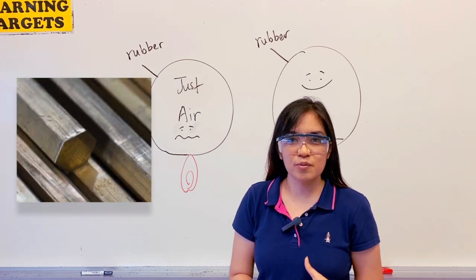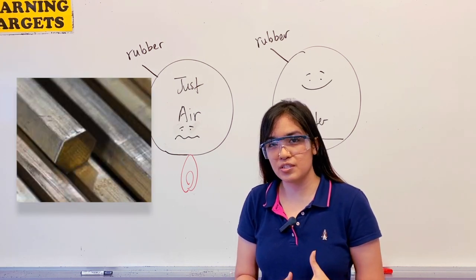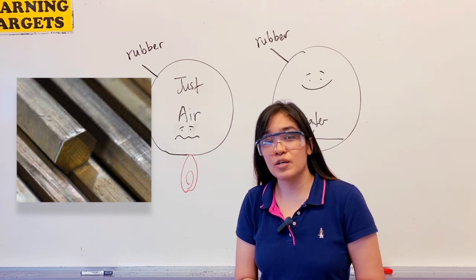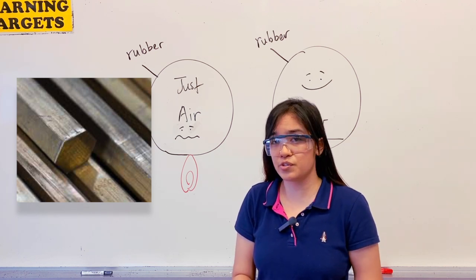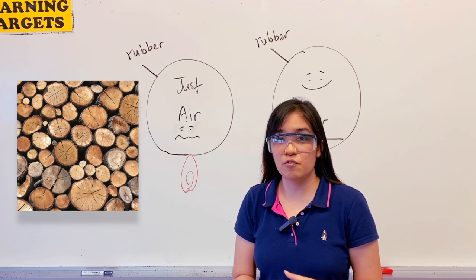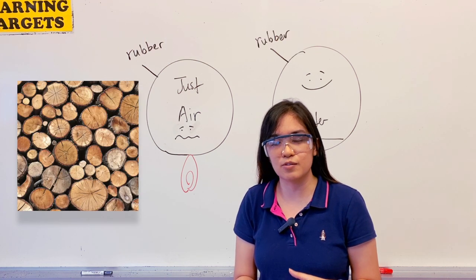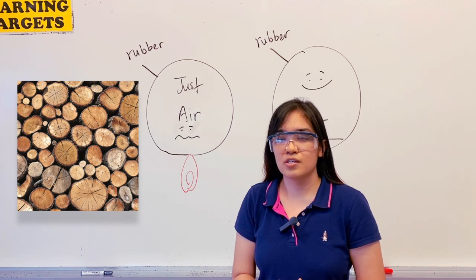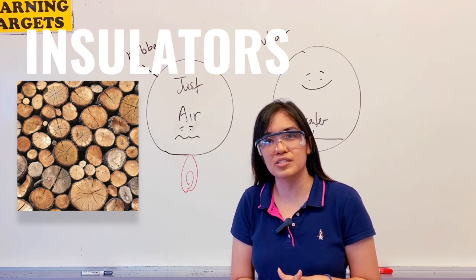For example, metals are also very good at passing heat through touching and we call these materials like metal conductors. Wood is an example of a material that does not pass heat well by touching. So we call materials such as wood insulators.